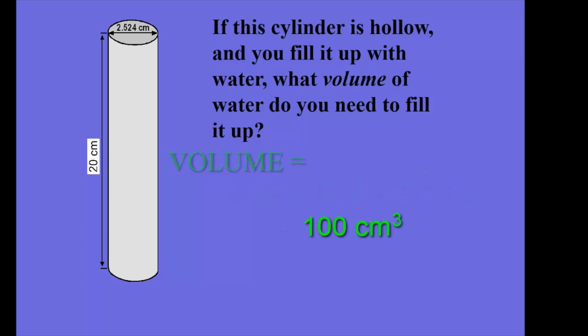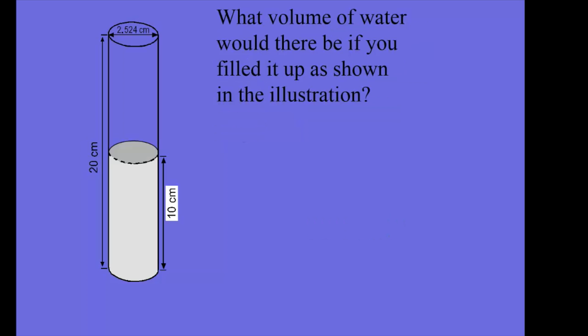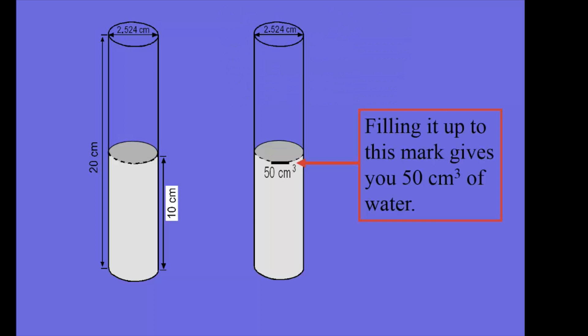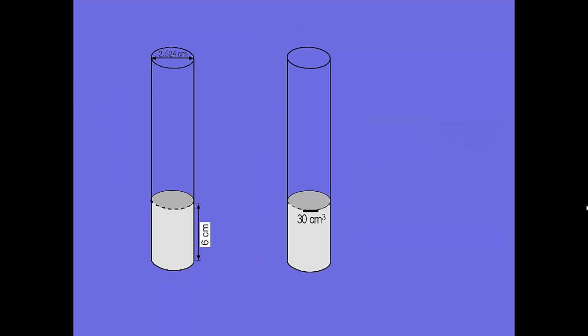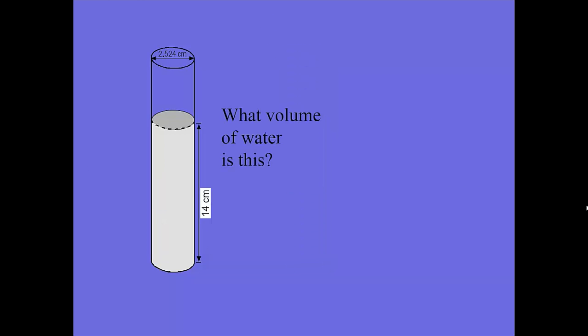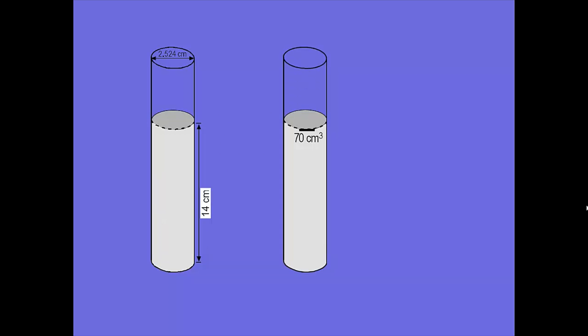If the cylinder is hollow and we fill it with water, the amount of water it holds is 100 cubic centimeters. If we only fill the water to 10 centimeters, we have pi r squared times 10 centimeters, giving 50 cubic centimeters. At 6 centimeters that gives 30 cubic centimeters, and filled to 14 centimeters it gives 70 cubic centimeters.